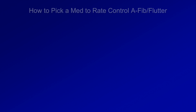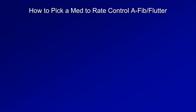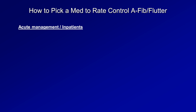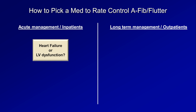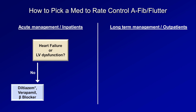First up is the most common: how to rate control rapid AFib or AFlutter. The first consideration is whether you are dealing with an inpatient in whom you are just attempting to stabilize temporarily while figuring out the long-term plan, or if you are dealing with an outpatient or soon-to-be-discharged inpatient. For the acute inpatient, ask whether there is evidence of heart failure or LV dysfunction. If no, then diltiazem, verapamil, and cardioselective beta blockers are all appropriate options.